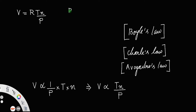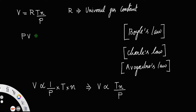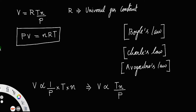R is called the universal gas constant. Taking P to the left, you can write PV = nRT. This equation is called the perfect gas equation or ideal gas equation, PV = nRT, where n is the number of moles.